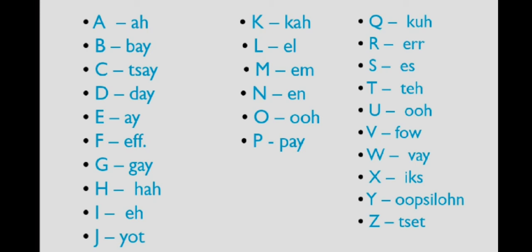U, F, V. Jho V alphabet hoota hai, wo German me Hame F ka sound deta hai. So hum isko perhate hai, F, V, X, Upsilon. Upsilon, and the last alphabet is set.